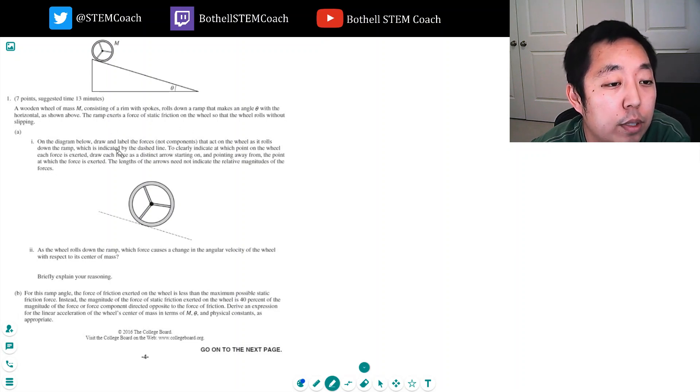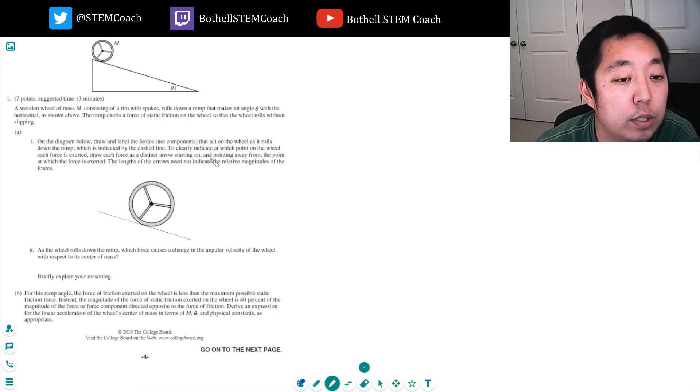On the diagram below, draw and label the forces, not components, that act on the wheel as it rolls down the ramp which is indicated by the dashed line. To clearly indicate which point the wheel and the force is exerted, draw each force as a distinct arrow starting on and pointing away from the point on which the force is exerted. The lengths of the arrows need not indicate the relative magnitudes of the forces.